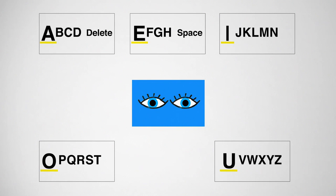An AEIOU board is an efficient, low-tech communication tool for a non-speaking person to spell words and messages by pointing and selecting letters with his or her eyes.